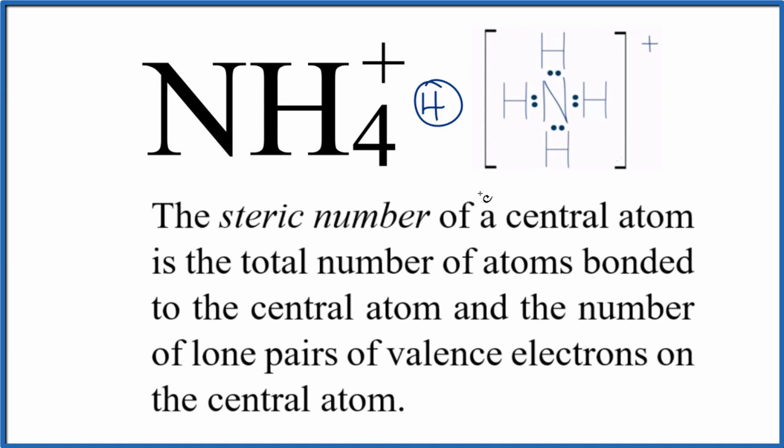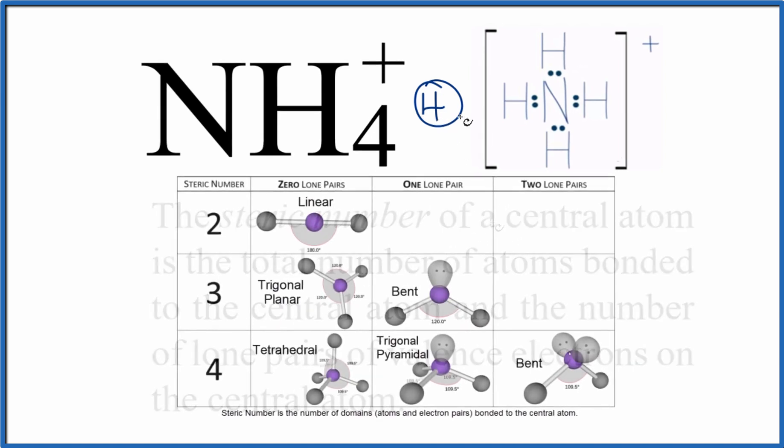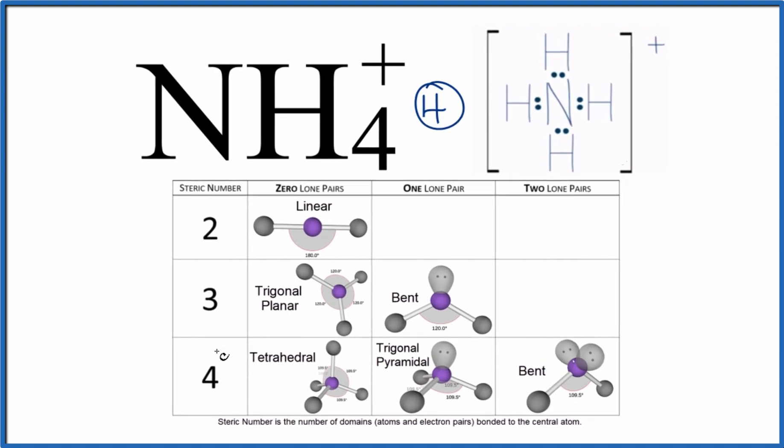That's useful because we can use the steric number here to find the molecular geometry. Let's say the steric number, that is four, and there aren't any lone pairs. All the electron pairs are involved in chemical bonds, zero lone pairs. We go down NH4+, that's a tetrahedral molecular geometry.